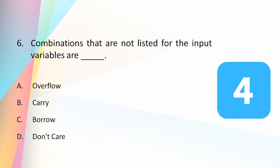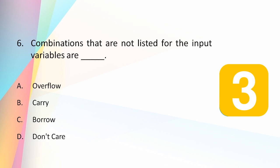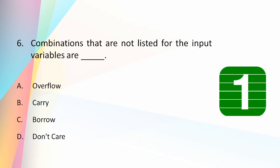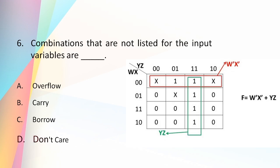Combinations that are not listed for the input variables are called: overflow, carry, borrow, or don't care? The answer is don't care. Don't care cases are the combinations of inputs for which the value of the output does not matter.